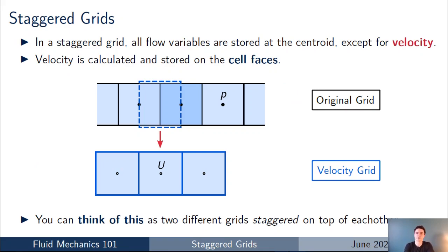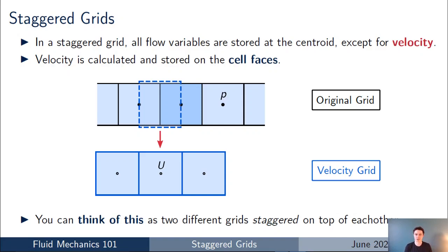In a staggered grid, the key point is that all of the flow variables are calculated and stored at the cell centroids — pressure, temperature, turbulent kinetic energy, etc. — except for velocity. Velocity is treated differently: it is calculated and stored not at the cell centroids but at the centre of the faces. I've got a diagram on the slide to illustrate that. The black circles indicate the cell centroids where you calculate pressure and temperature, and the white circles show where the velocity is stored on the cell faces.